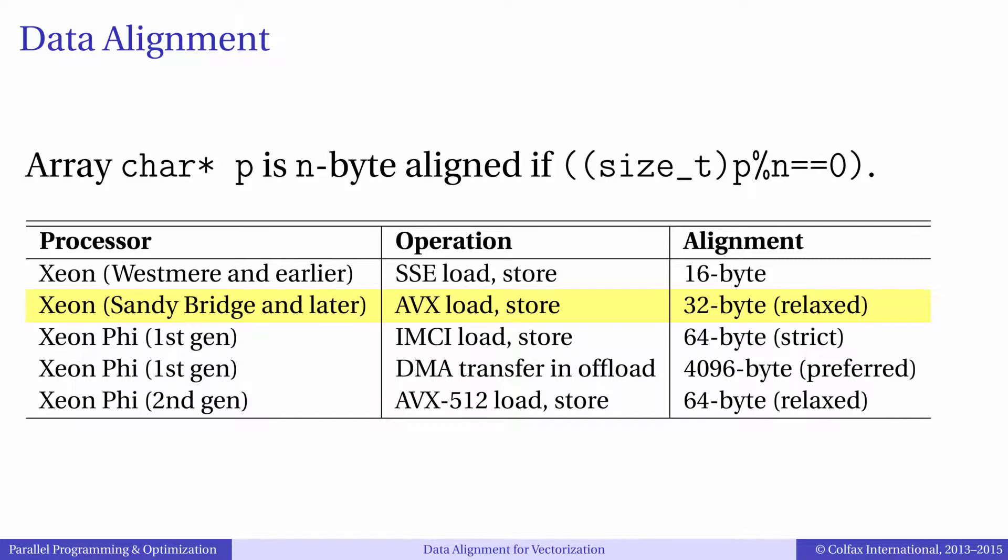For the first-generation Xeon Phi coprocessors with 512-bit IMCI instructions, you must have your data aligned to a 64-byte boundary to load it into vector registers. Second-generation Xeon Phi coprocessors will have relaxed alignment requirements.